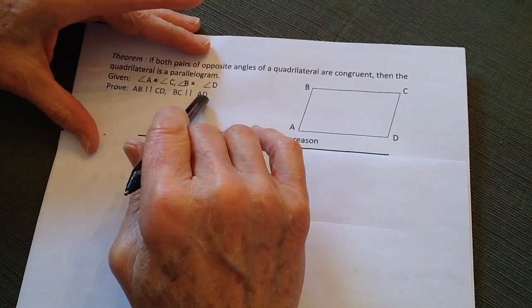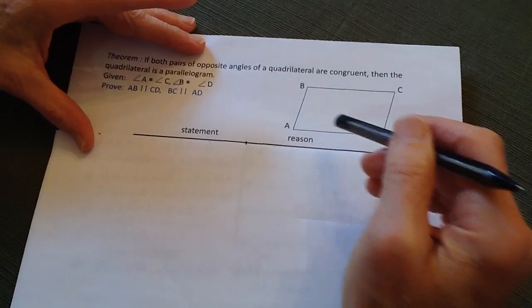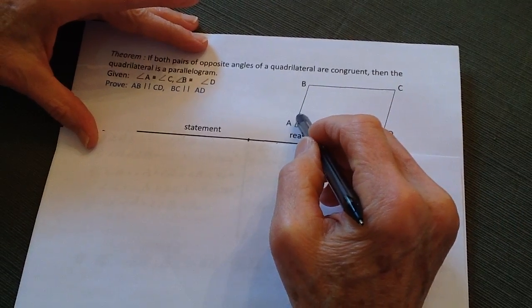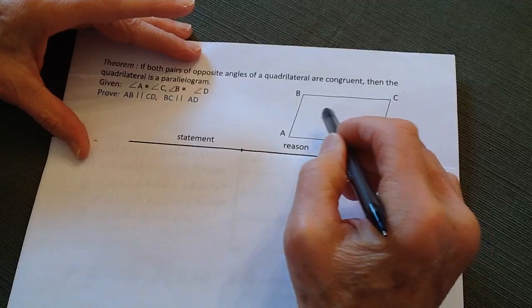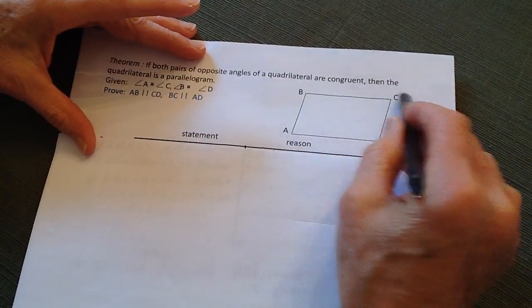And we're going to prove that they're parallel. And the easiest way to do this is that we know that if a plus b is 180 degrees,